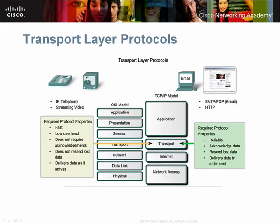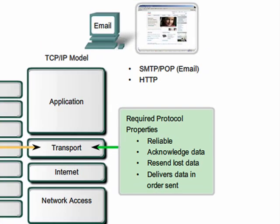The two most common transport layer protocols of the TCP/IP protocol suite are Transmission Control Protocol, or TCP, and User Datagram Protocol, also called UDP. Data such as email and web pages require that all of the data sent arrive at the destination in order to be useful.